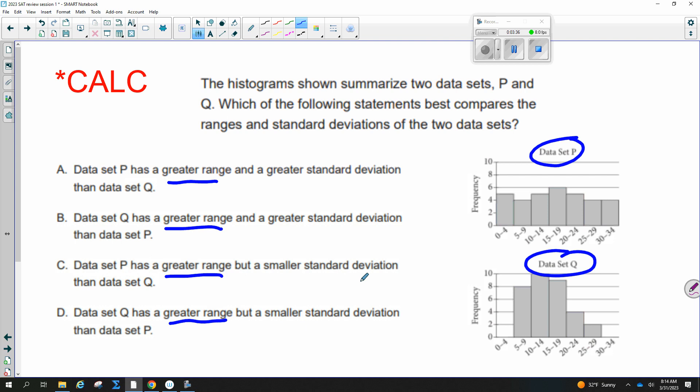So which one of these has a greater range? There are more values here from like 0 to 34 versus this one. So I would say P has a greater range. So now we can cross these off. So P has a greater range. So standard deviation, we're looking at our typical distance from the center. So which one has a greater standard deviation? So that would be more spread from the center.